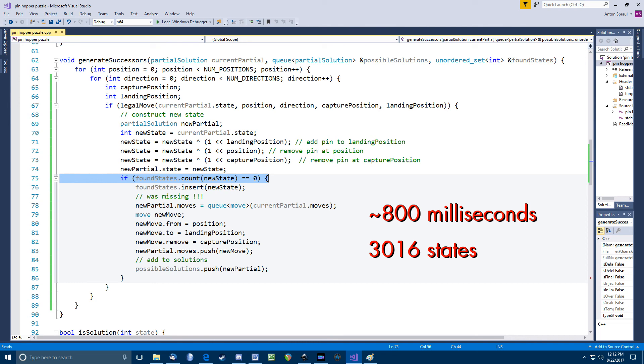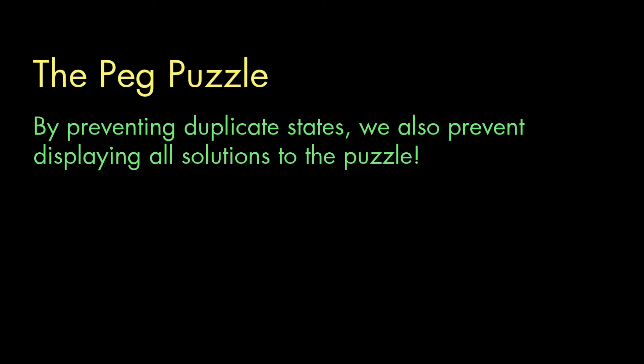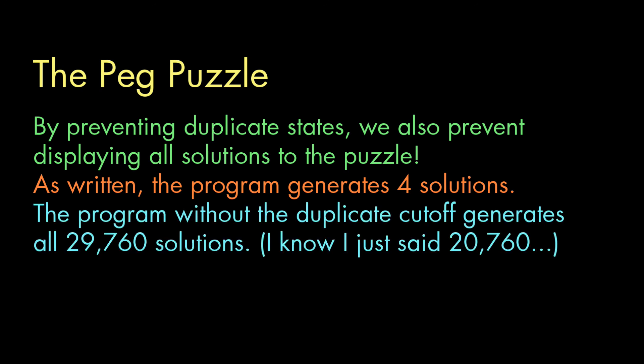Now, if I remove that and let the program generate all the possible states, it generates over a million of them and the program takes four and a half minutes to run. And that's actually with me removing the call to display the solutions. Otherwise, it would be a lot longer. Because that's another thing. Although this program doesn't halt when it finds the first solution, with the duplicate state cutoff, the program generates just four solutions. But because there are so many different ways, so many different permutations of reordering moves to get the same effect, there are actually 20,760 distinct solutions to this problem. And without the duplicate cutoff, the program will generate them all. So we have to be clear on the distinction between finding a solution to this PEG puzzle and finding all of them.